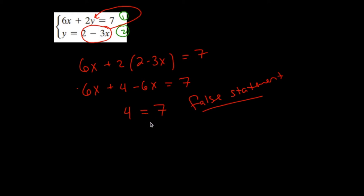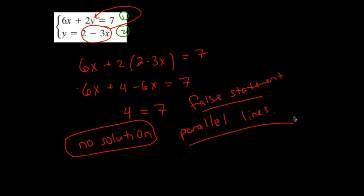A false statement—well, obviously I can't solve for the variables, so it's not a single solution. But when I deal with this situation and get a false statement, that indicates there is no solution. What does that mean? That means this is the parallel line situation.